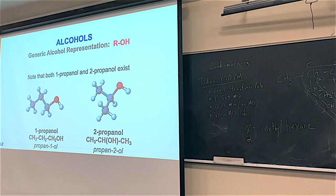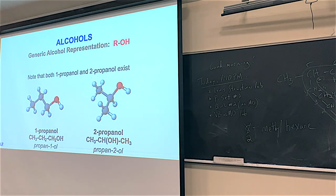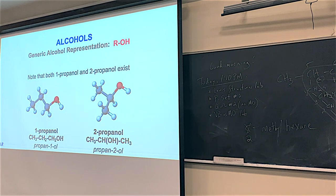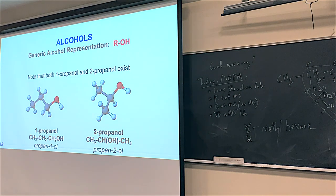Here's one-propanol or propan-1-ol. You can absolutely have propan-2-ol or 2-propanol. 2-propanol is actually more common — if you've ever bought isopropyl alcohol at the store, isopropyl alcohol is 2-propanol. The reactivity of an alcohol changes a little depending on which carbon it is. Chemists will often put the OH in parentheses to show it's connected to the last carbon.